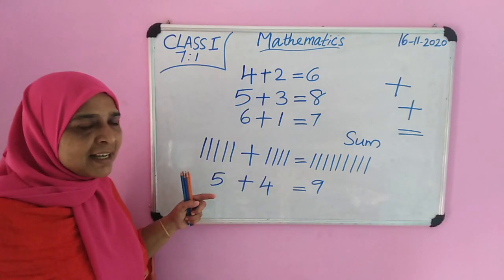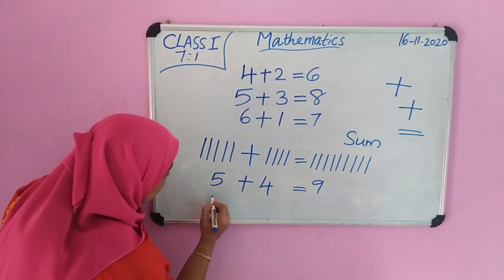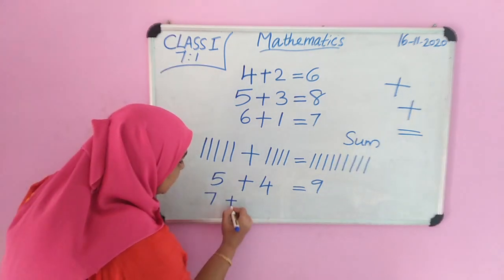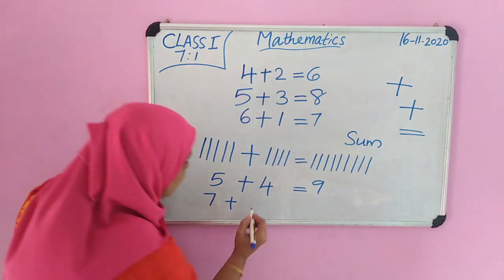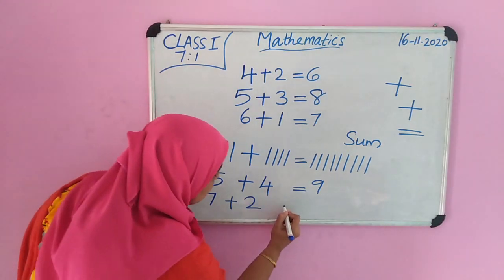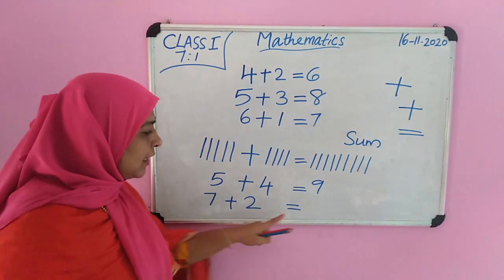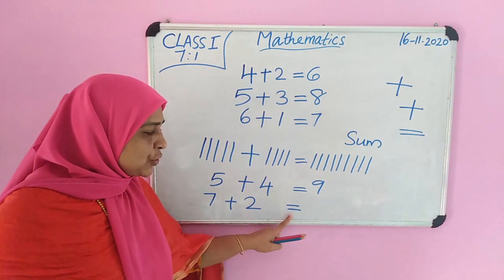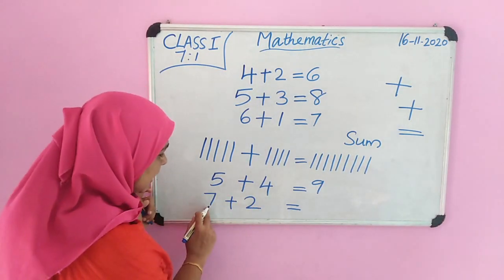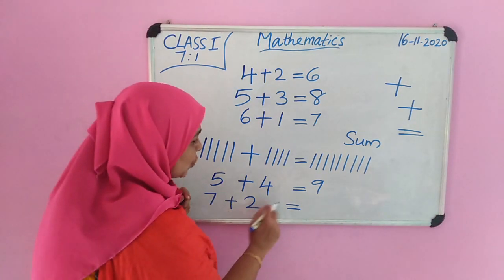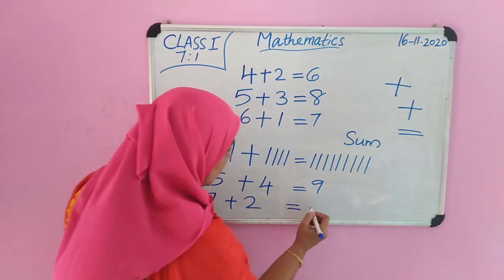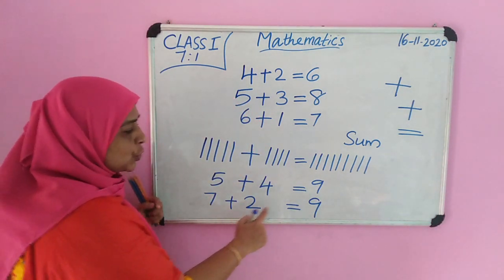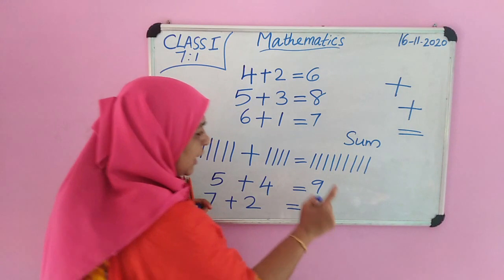Is it clear? Yes. Okay. 7. This symbol denotes addition. 2. Again this symbol denotes equal to. We represent equal to this. 7 plus 2 is equal to 9. Again 7 plus 2 equal to 9.